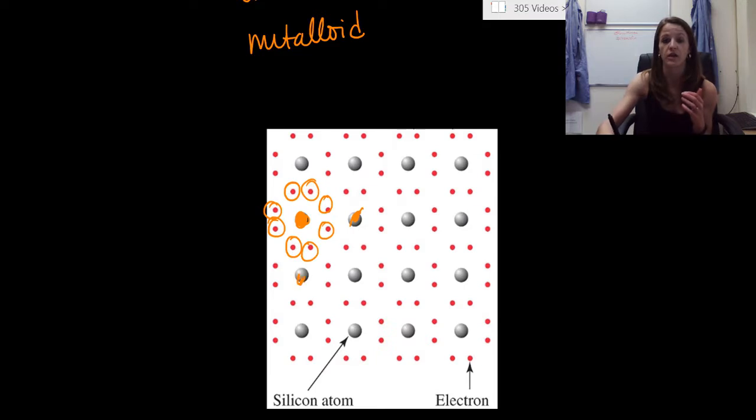So what it does is it shares four electrons from neighboring silicon atoms. So here's one. It takes them from here and from here. So this is a basic structure. It's a ton of silicon just mapped together.